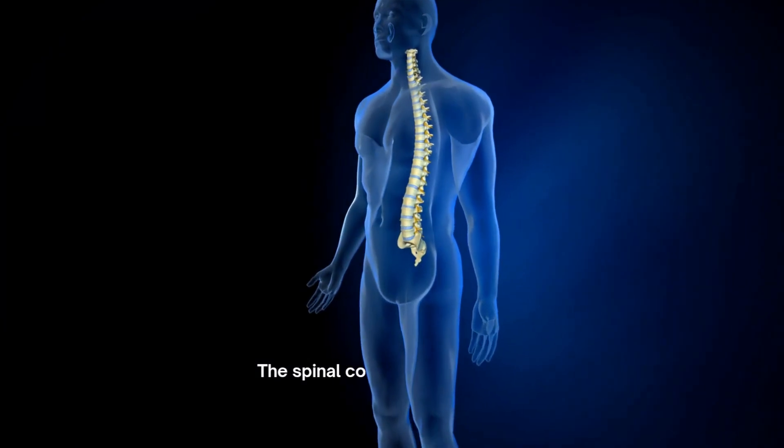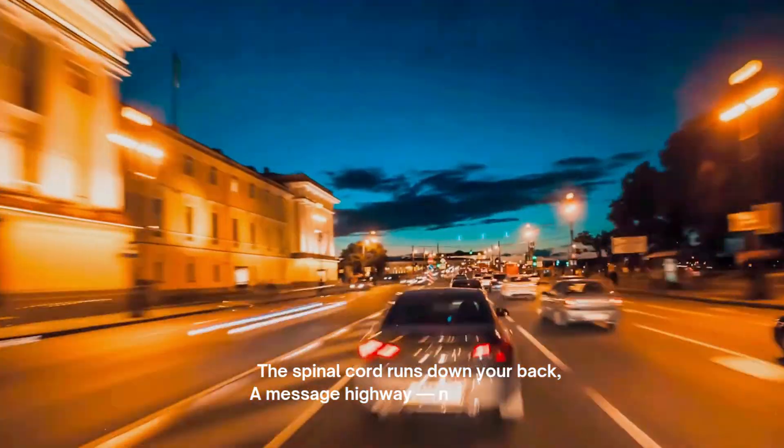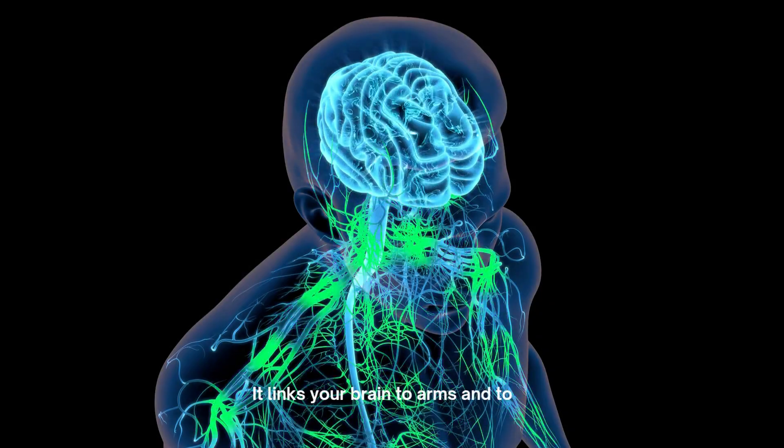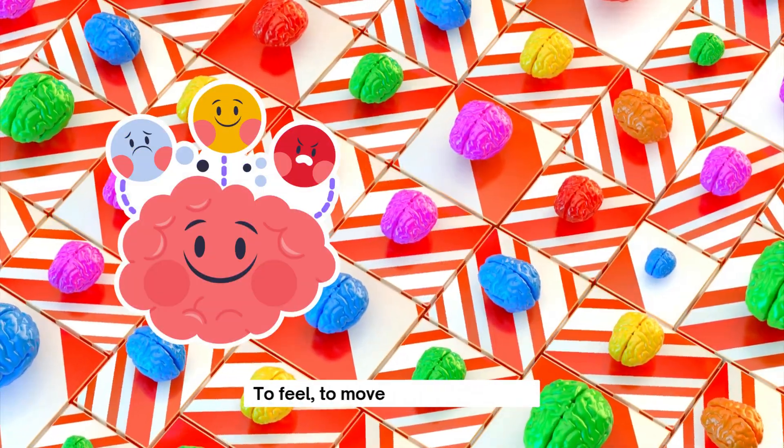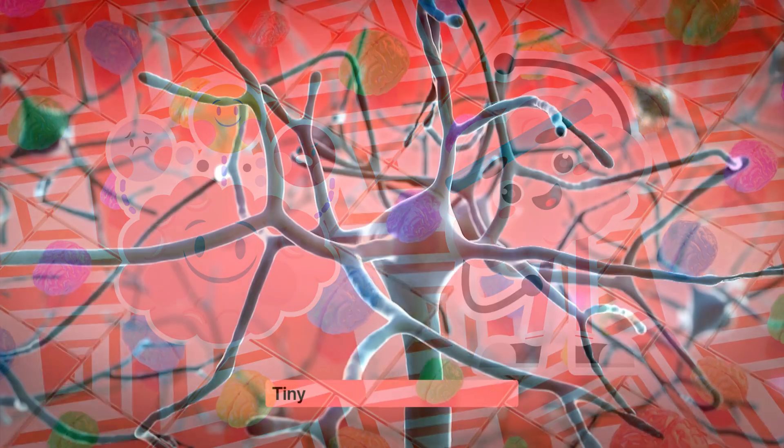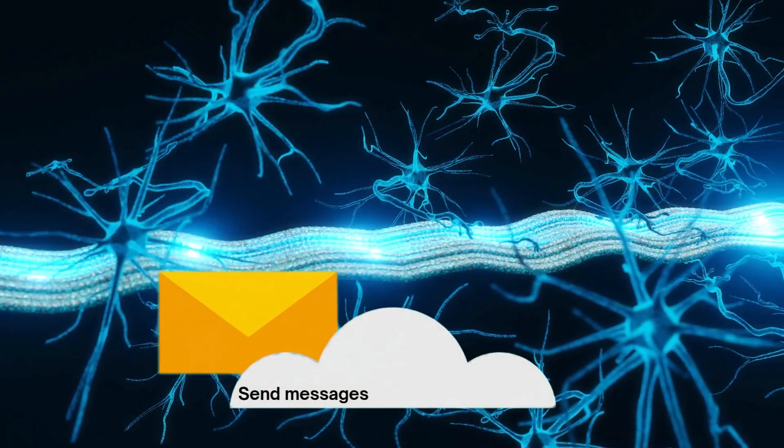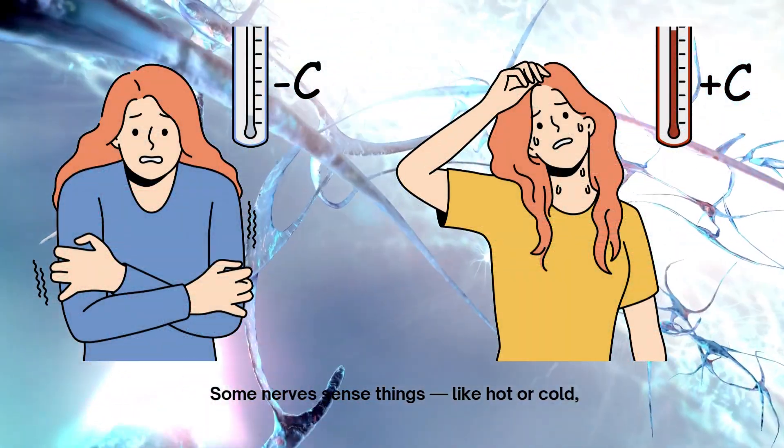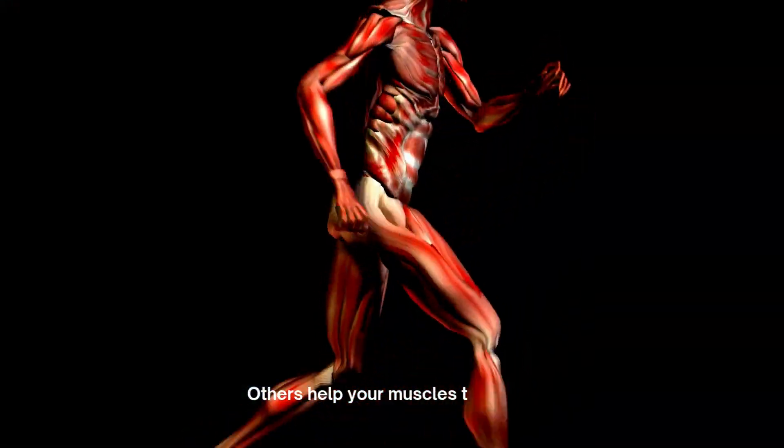The spinal cord runs down your back, a message highway, no time to slack. It links your brain to arms and toes, to feel, to move, wherever it goes. Tiny wires called the nerves, send messages with speed and verve. Some nerves sense things like hot or cold, others help your muscles take hold.